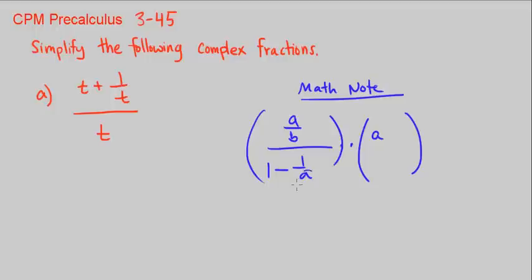So A times B over A times B — because this equals 1 — and we're going to multiply by 1 to simplify this.